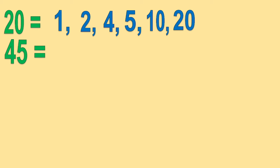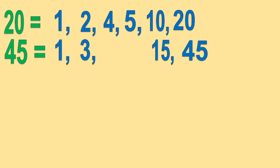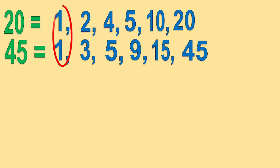How about 45? We have 1 times 45, 3 times 15, and 5 times 9. Now, encircle the common factors. We have 1 and 5. So the greatest common factor is 5.